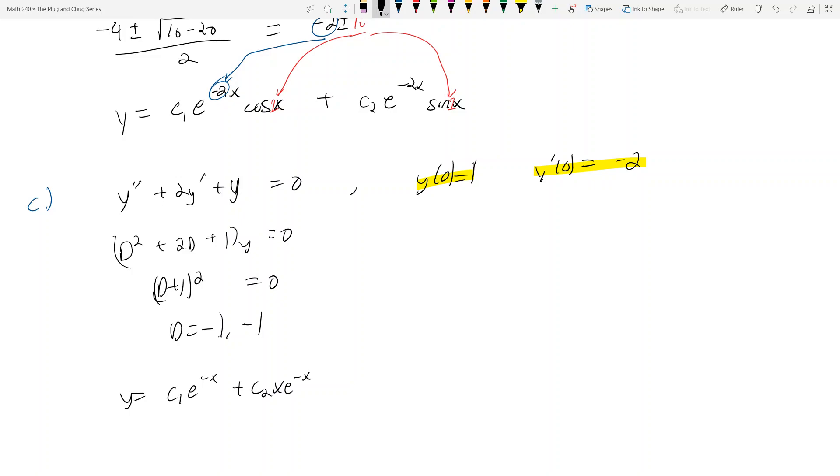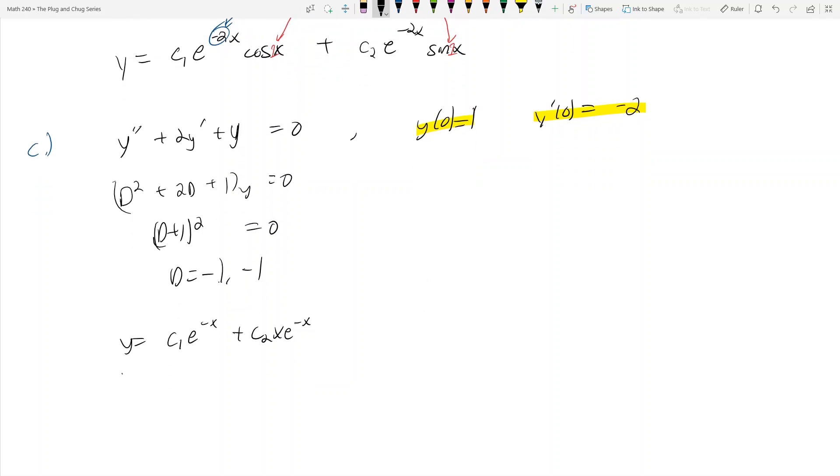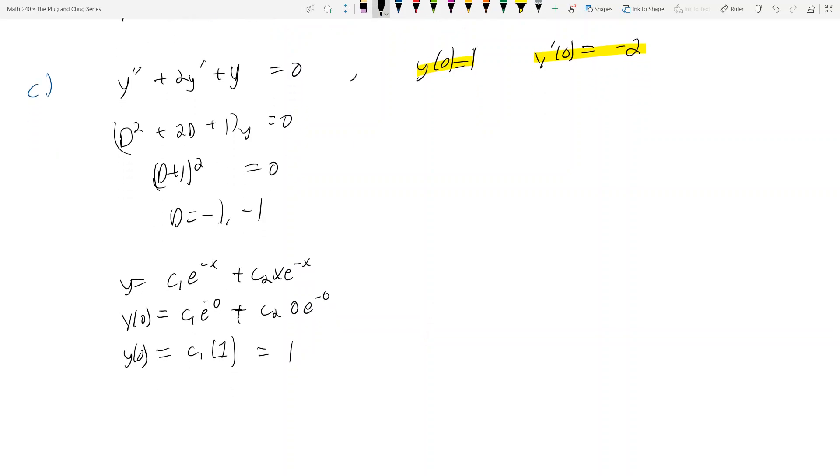Now you need to take advantage that y of 0 equals 1. y at 0 is actually equal to C1 e to the 0, which is just 0, plus C2 times 0 e to the negative 0, but this is just 0. You get y of 0 equals C1 e to the 0 is 1, so e to the 1 times 1, and this equals 1. From y of 0 equaling 1, you can see that C1 is equal to 1.